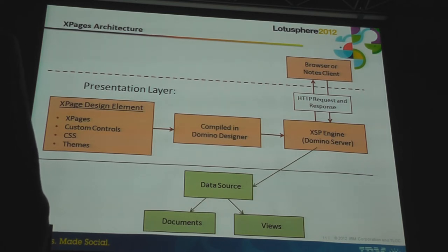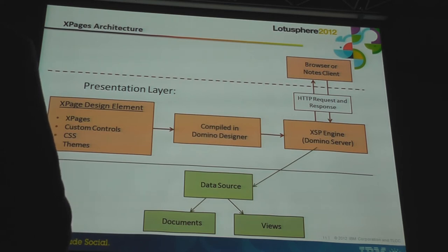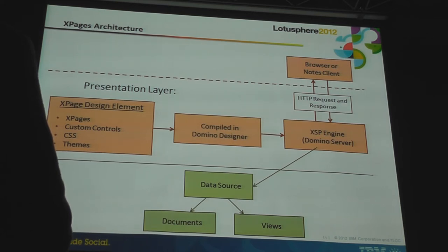With 8.5.0, the XSP engine was added to the HTTP task on the Domino server — that's your XPages runtime engine. Whenever a client requests an XPage, the XSP task is going to return that as an HTML document, either to a Notes client or a web browser. XPages are compiled in Designer, so when you save the XPage or manually compile all XPages in an application, they're actually compiled to Java class files.